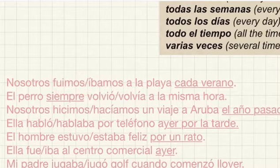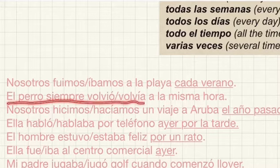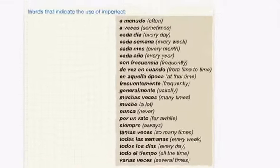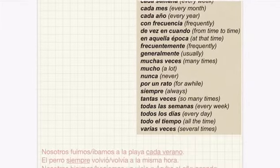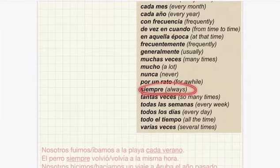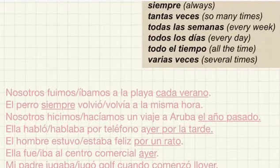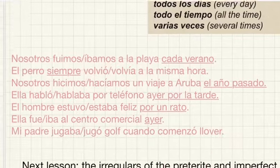The second question states: 'el perro siempre volvió or volvía a la misma hora.' As you can see, it says siempre, and siempre is a key word for the imperfect tense. So we are actually going to use the imperfect — volvía — and we're going to cross out volvió.